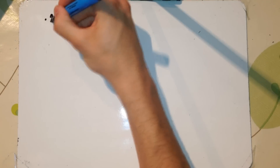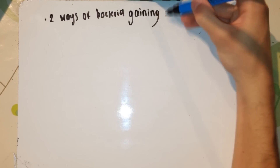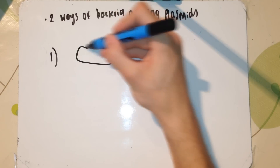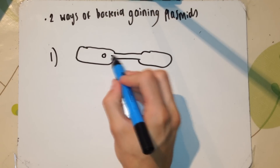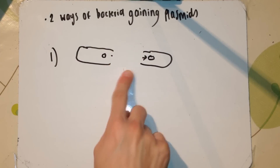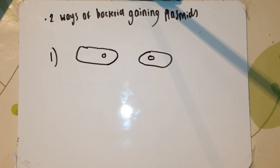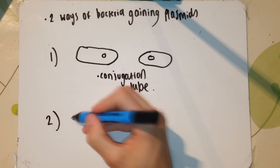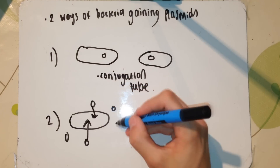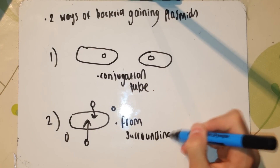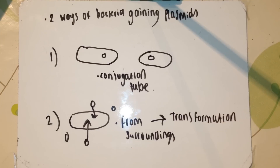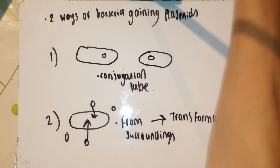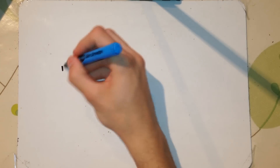There are two ways of a bacteria gaining a plasmid. The first is a conjugation tube — a bacteria that doesn't have a plasmid and a bacteria that does can form a conjugation tube between them. The bacteria with the plasmid replicates it and passes it along the conjugation tube to the other bacteria, so now they both have the plasmid. The second is called transformation, where a bacteria without plasmids takes them up from the surrounding medium. Regardless of the method, if a bacteria takes up a recombinant plasmid, they're known as transgenic bacteria.